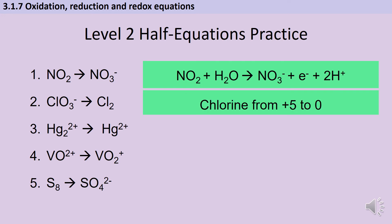In question two, chlorine is reduced from plus five to zero. Firstly we need to balance the chlorine — we're going to need two chlorate ions. Next we sort out the electrons: getting from plus five to zero requires five electrons and we're doing it twice, so we need ten electrons on the left hand side. Then we worry about the oxygen: with two chlorate ions we've got six oxygens on the left hand side, so we need six water molecules on the right hand side, and those need to be counteracted by twelve hydrogen ions on the left hand side.